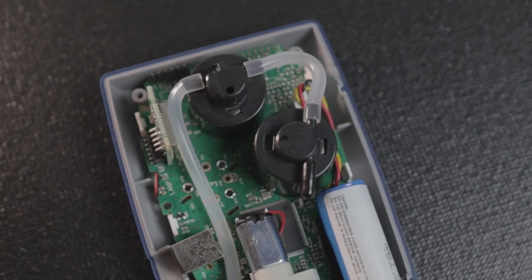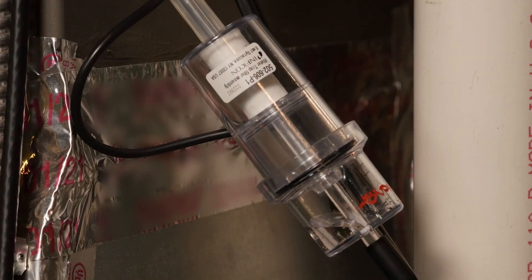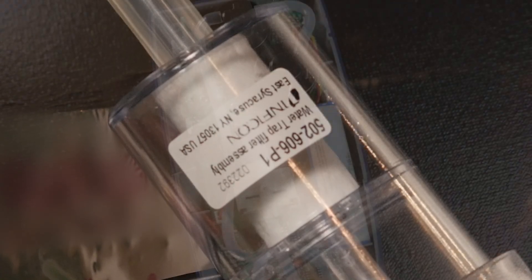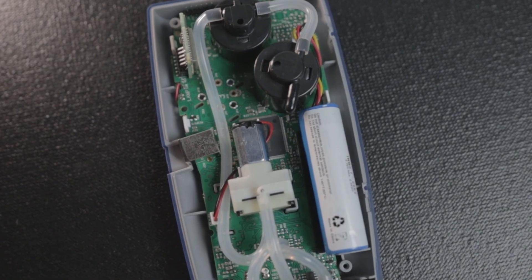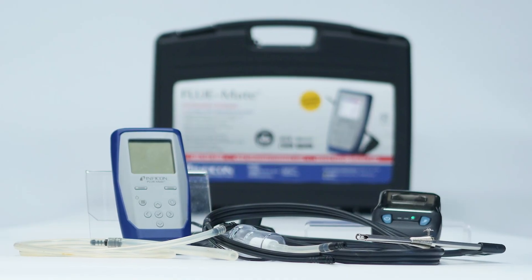Field-replaceable sensors, probe, water trap, filter, and battery help to minimize downtime and make Flumate easy to maintain.